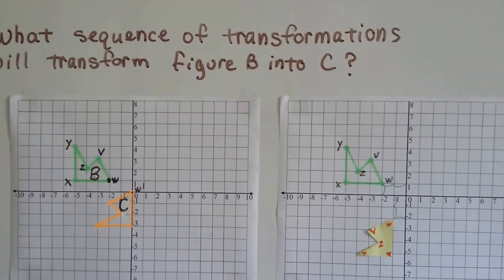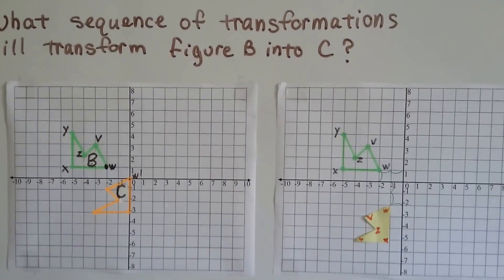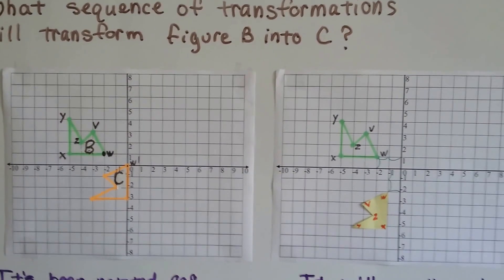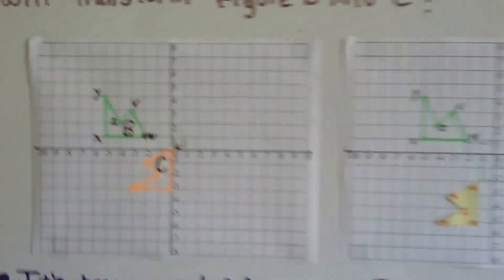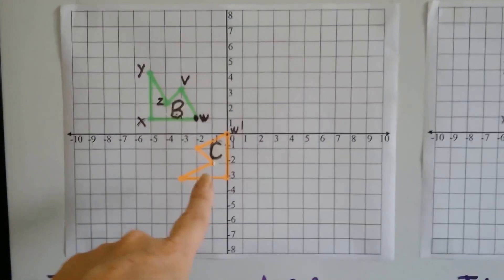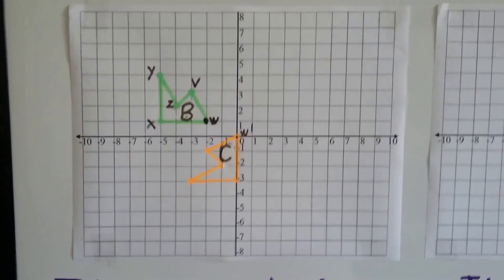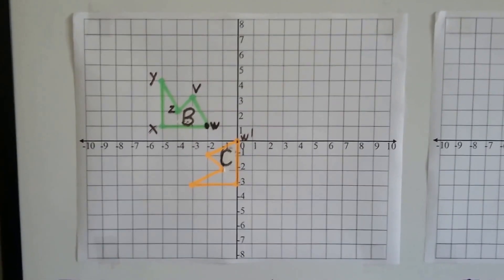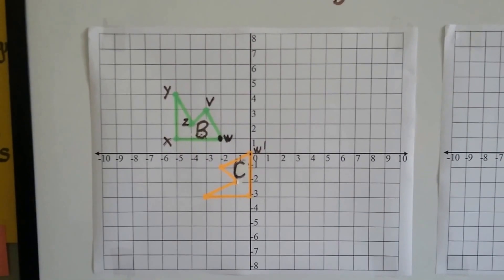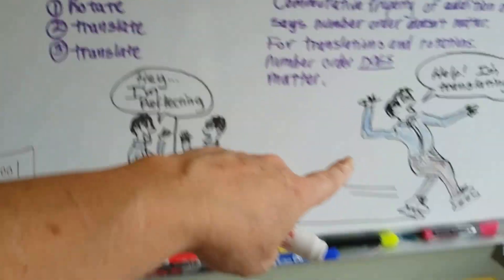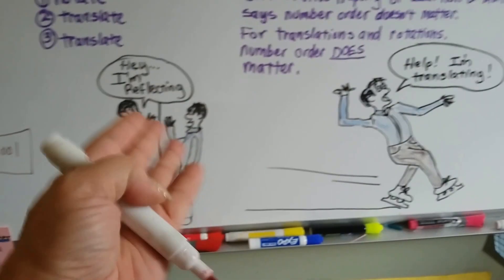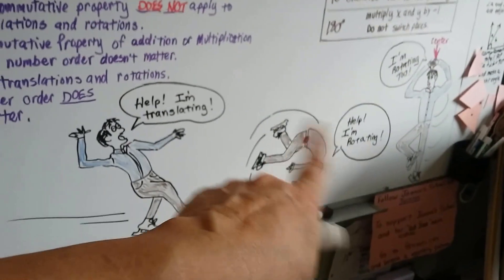What sequence of transformations will transform figure B into C? So the green one, B, turned into C, and we have to figure out what happened to it. What transformations did it go through? Did it translate and slide? Did it reflect? Or did it rotate?